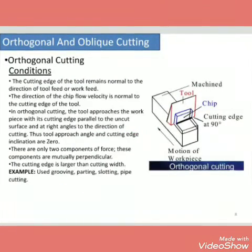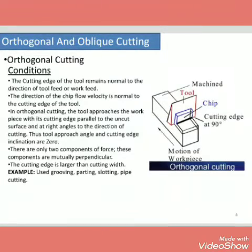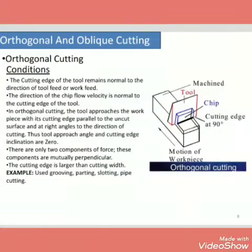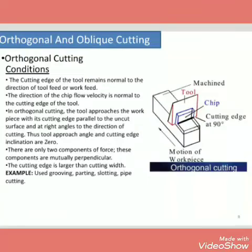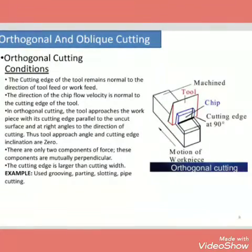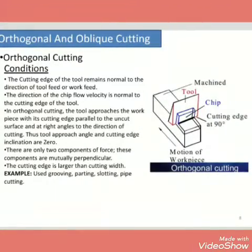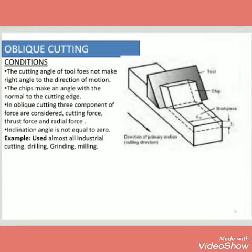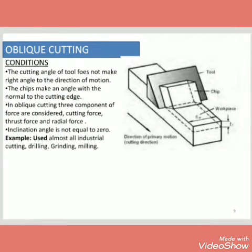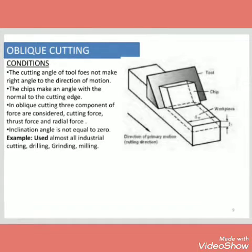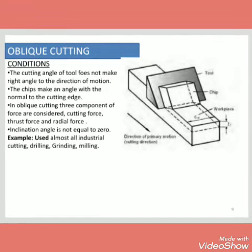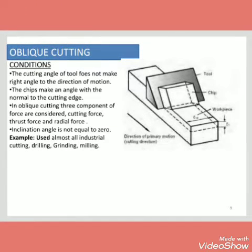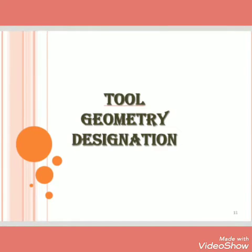Next is orthogonal cutting and oblique cutting. In orthogonal cutting, the cutting edge of the tool remains normal to the direction of the tool feed or work feed. The direction of chip flow is normal to the cutting edge of the tool, and the cutting edge is larger than the cutting width. Examples are grooving, parting, slotting, etc. In oblique cutting, the cutting edge of the tool does not make a right angle to the direction of motion. The chip makes an angle with the normal to the cutting edge. In oblique cutting, three components of force are considered: cutting force, thrust force, and radial force.